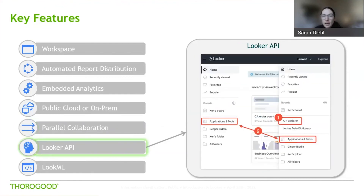Next, we have the Looker API. Looker provides a secure API that has a wide range of uses. The Looker API can be used to perform a variety of tasks, such as managing your Looker instance, fetching data from your data platform, creating custom applications and data-driven workflows, writing scripts to provision new user accounts, run queries, schedule reports, and much more. According to Looker, basically anything you can do with the Looker application, you can also do with the Looker API.